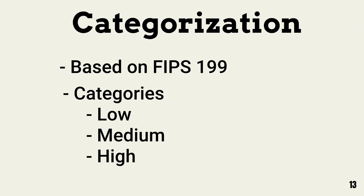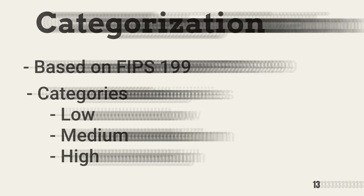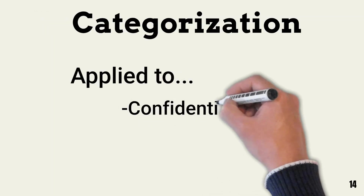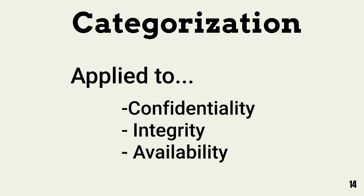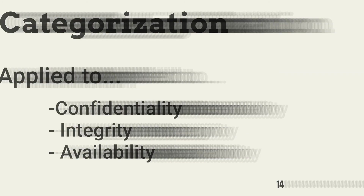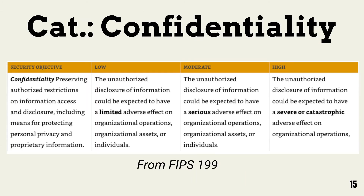The FIPS 199 categorization is included in the CISSP common body of knowledge. We apply categories to each element of the CIA — confidentiality, integrity, and availability. This is a table from FIPS 199. It shows the guidelines for the high, medium, and low categories for confidentiality. Note that the greater the level of business impact from the loss of confidentiality, the higher the category. This is the same across integrity and availability.